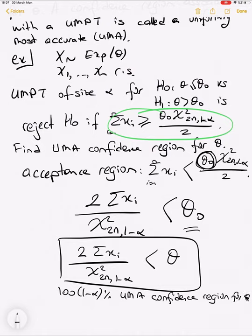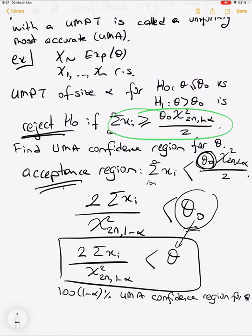After defining the test and finding the value of c, write the complete test. Then find the acceptance region. After finding the acceptance region, write the region for a single θ₀ value, and then replace θ₀ by θ. It's that straightforward.